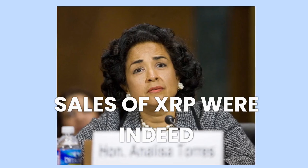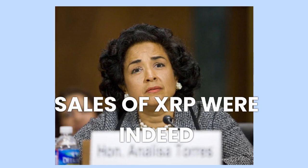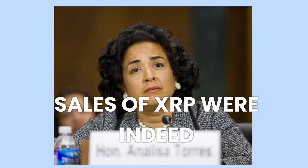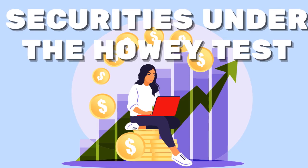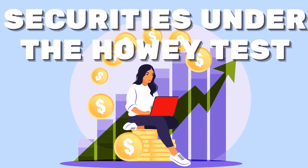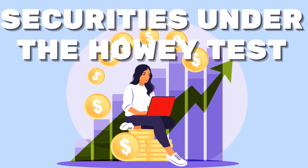The saga saw a pivotal moment in July 2023 when District Judge Annalisa Torres ruled that Ripple's institutional sales of XRP were indeed an unregistered securities offering. But retail sales of XRP, those made to everyday consumers, did not qualify as securities under the Howey test.